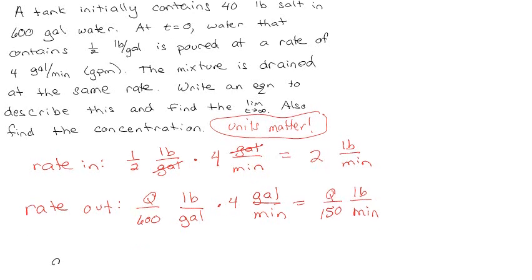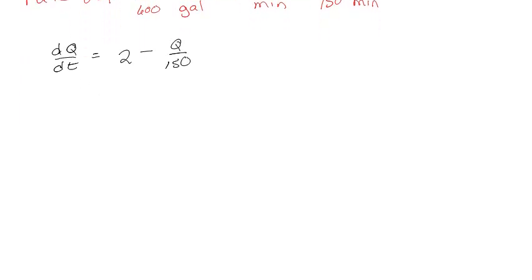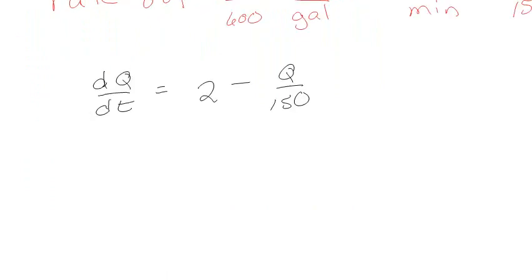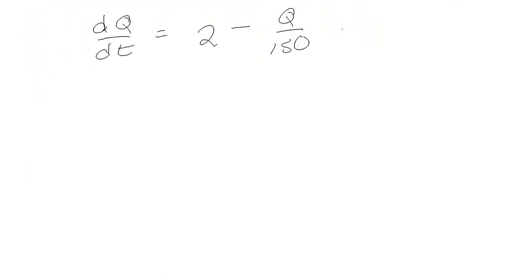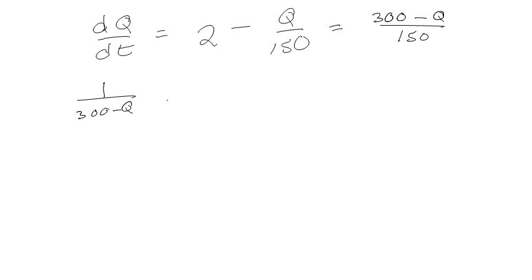So that means dQ/dt is equal to a rate in of 2 minus a rate out of Q/150. We can rearrange this to 2 minus Q/150, which we rewrite as (300 - Q)/150. So we have 1/(300 - Q) dQ equals (1/150) dT.